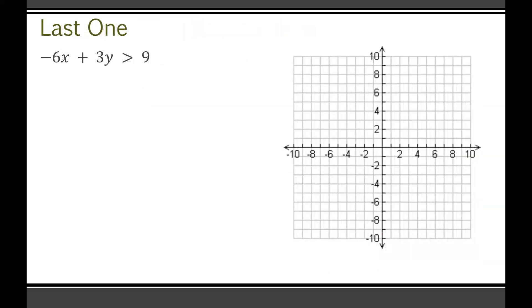One last question. Negative 6x plus 3y is greater than 9. This one is a little bit weird because y is not by itself in this case. Whenever you're graphing something, you want to make sure y is all by itself because that makes our lives way easier. So what I would do is start by adding 6x to both sides. This is going to give me 3y is greater than 6x plus 9. But y is still not totally by itself. So let's divide everything by 3 here. Y is now greater than 2x plus 3.